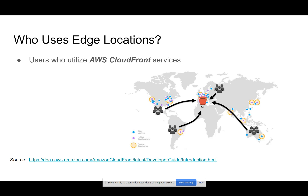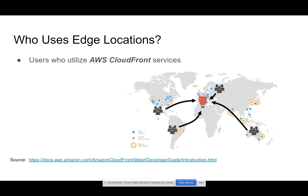Users who utilize AWS CloudFront services are the users of edge locations. CloudFront is a service offered by AWS — Amazon Web Services. You can see in this map, which we'll look at again later. The blue dots indicate edge locations, the purple dots indicate multiple edge locations, and then there are the regional edge caches and the S3 bucket, representing users who are accessing information.